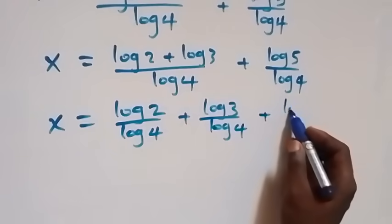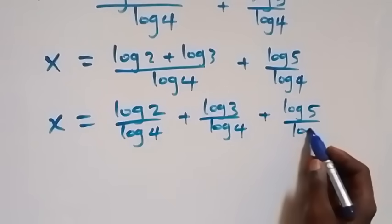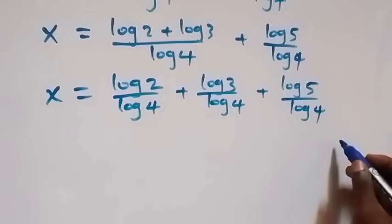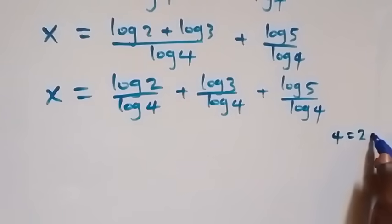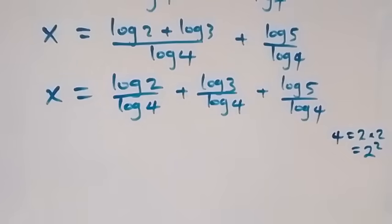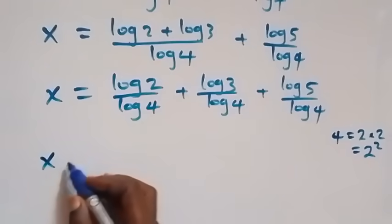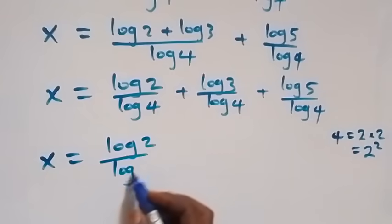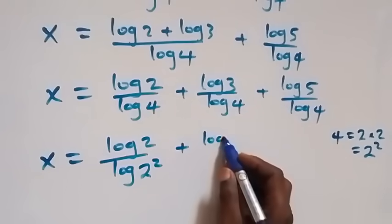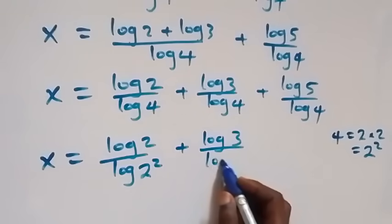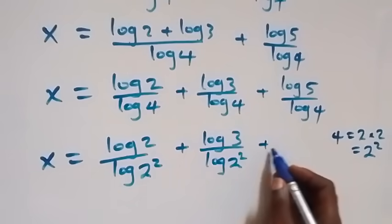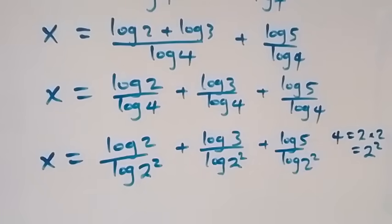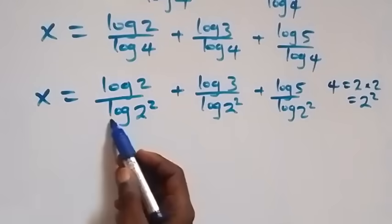Plus log 5 over log 4. We can also reduce further by writing 4 as 2 squared. So x equals log 2 over log 2 squared, plus log 3 over log 2 squared, plus log 5 over log 2 squared.